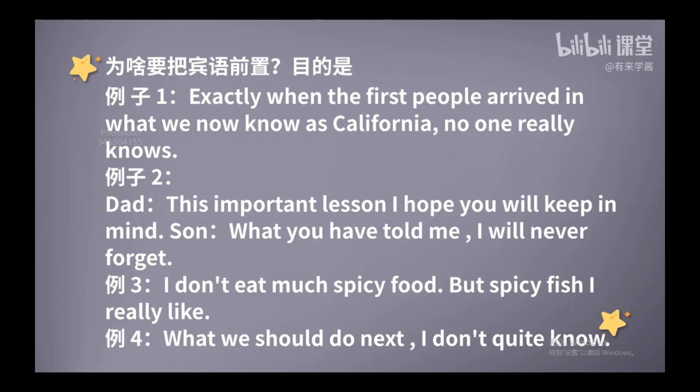这种特殊的宾语前置呢，其实在口语当中也不少见。比如说一个老外要说，我不大喜欢吃辣的东西，但是辣子鱼我特别喜欢，可能会这样说：I don't eat much spicy food, but spicy fish, I really like. 最后半句正常的语序应该是说：I really like spicy fish. 但是如果他特意要强调辣子鱼是个例外，那么就可以把它提到前面来。